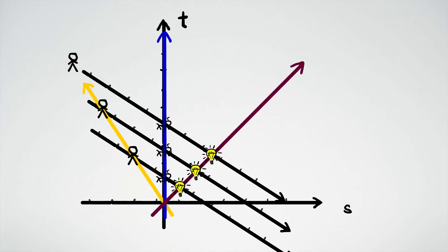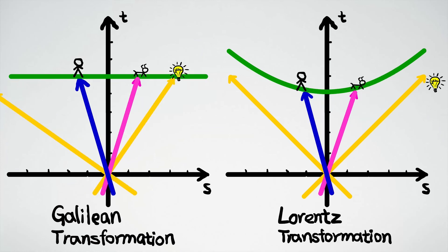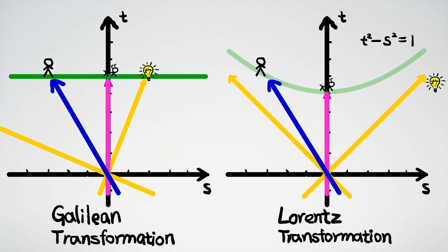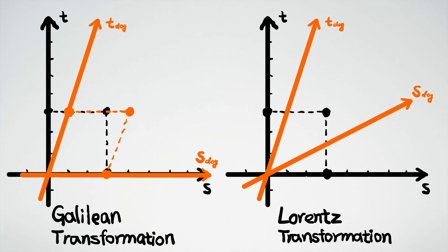This transformation is known as the Lorentz transformation. Different from the Galilean transformation, Lorentz transformation moves different objects along hyperbolas rather than horizontal lines. The asymptote of those hyperbolas amazingly becomes the world line of light, which never changes during the transformation.